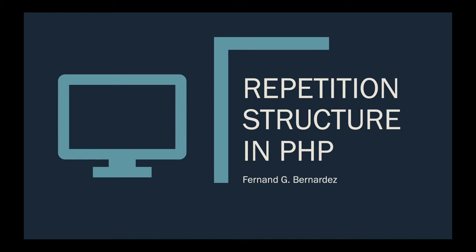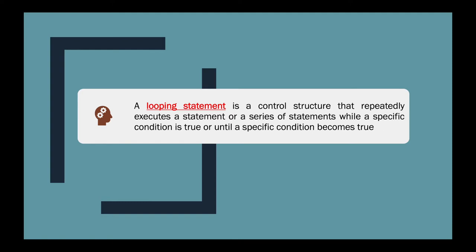So let's get started. A looping statement is a control structure that repeatedly executes a statement or a series of statements while a specific condition is true, or until a specific condition becomes true. We use looping statements because there are problems that need to be resolved and that produce a lot of results.